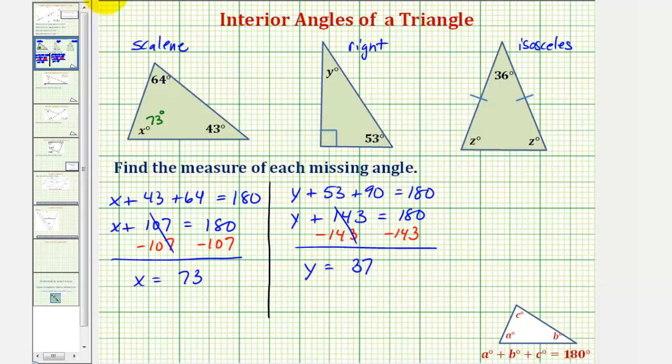Therefore, the measure of the missing angle is thirty-seven degrees. The other option would be to recognize that y plus fifty-three must equal ninety degrees, because these two angles are complementary. Subtracting fifty-three on both sides, we get the same result, y equals thirty-seven.